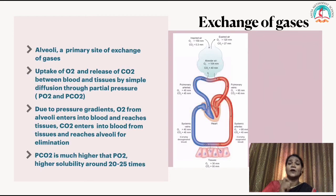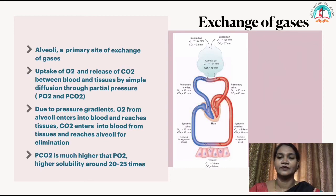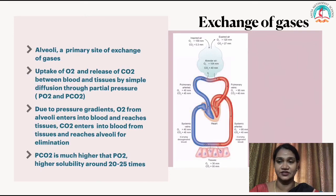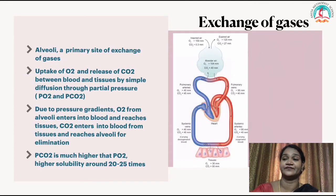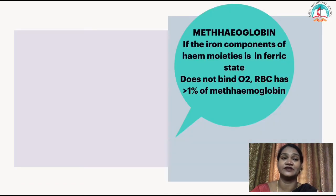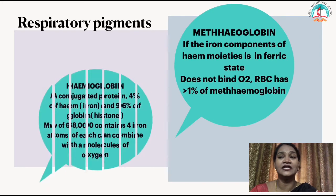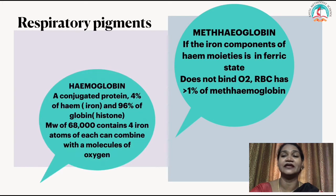The partial pressure of carbon dioxide is much higher than the partial pressure of oxygen — around 20 to 25 times higher. There are two important pigments involved in respiration: one is hemoglobin and the other is methemoglobin.